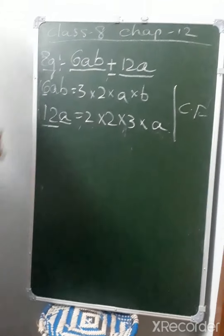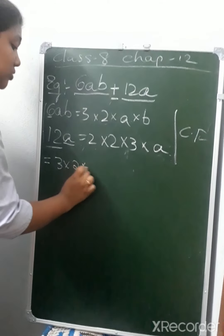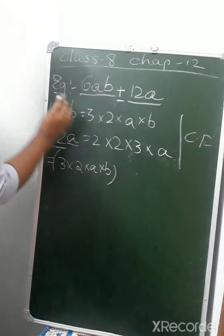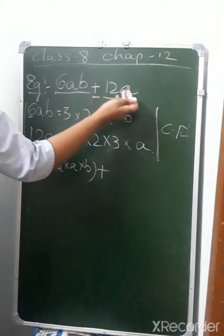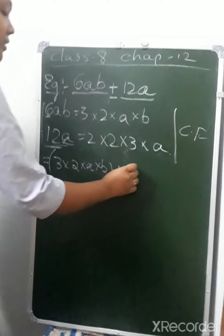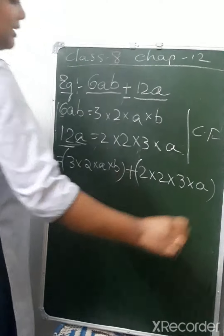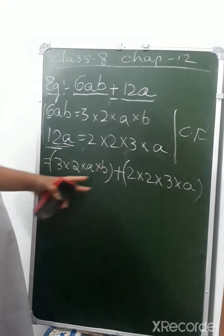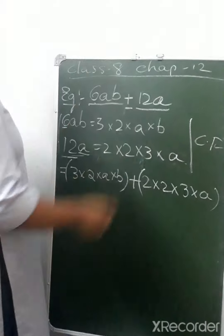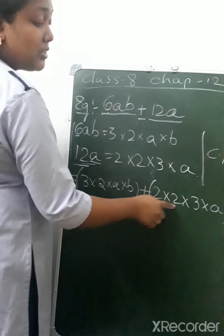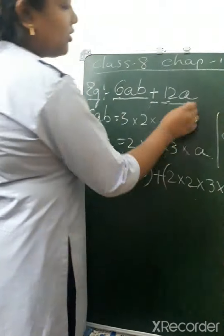Let us substitute. 6ab can be written as 3 into 2 into a into b. Plus. And 12a can be written as 2 into 2 into 3 into a. Let's verify: 3 into 2 gives 6, times ab gives 6ab. And 2 into 2 is 4, 4 threes are 12, times a gives 12a. Confirmed.